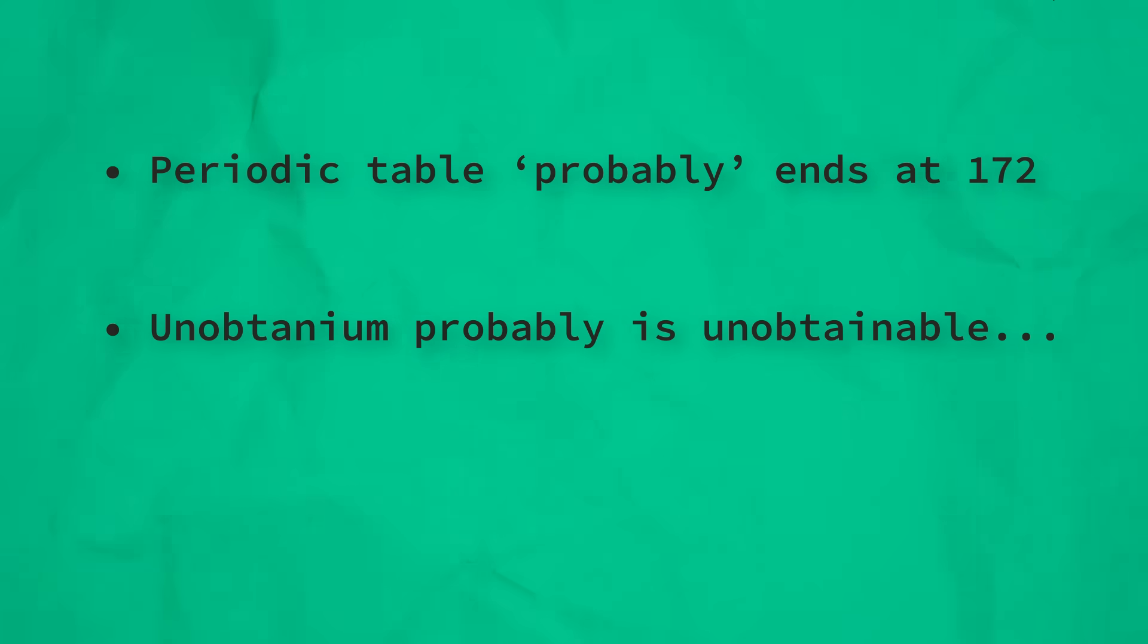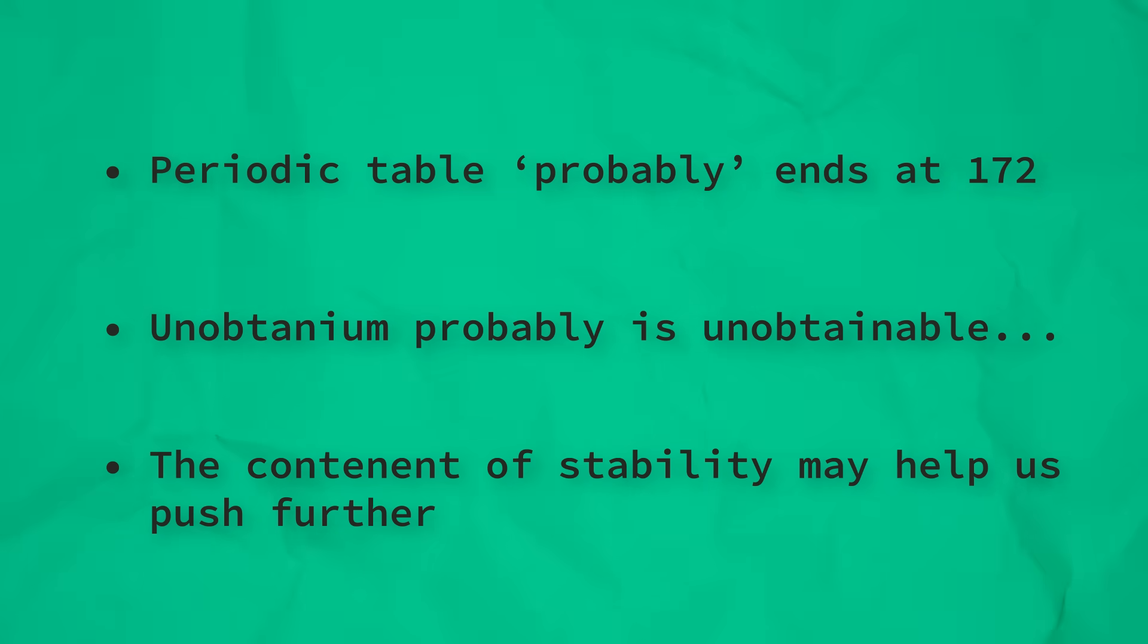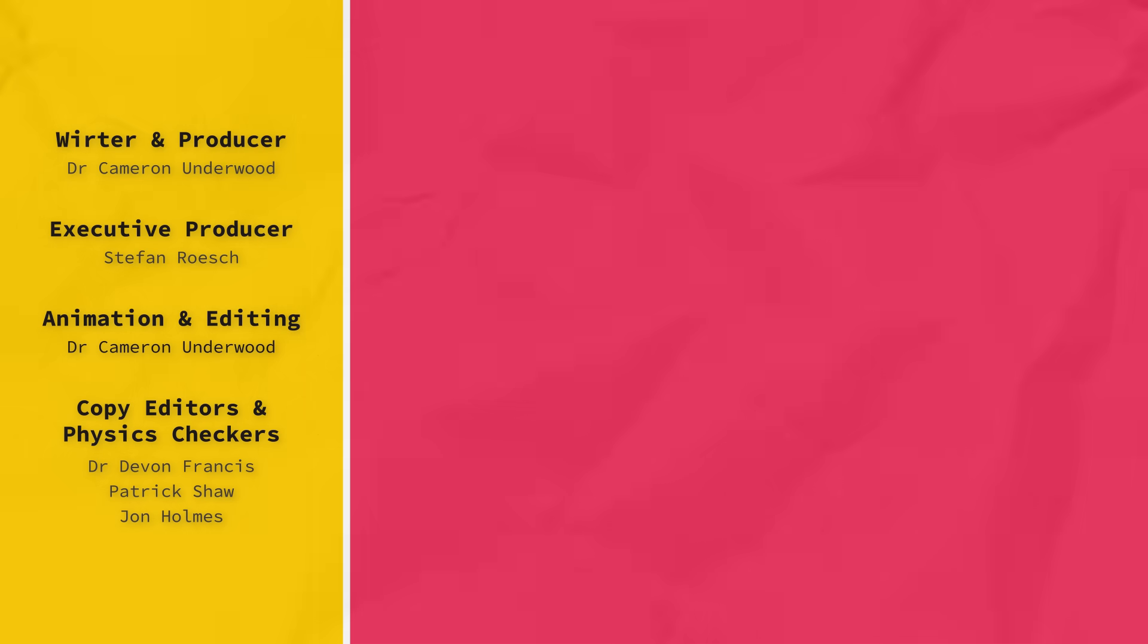So we don't know exactly, but based on our current understanding of physics, we know that the periodic table may end somewhere around an atomic number of 172, and that unobtainium probably is unobtainable, but the continent of stability may be our route into understanding heavier and heavier matter.